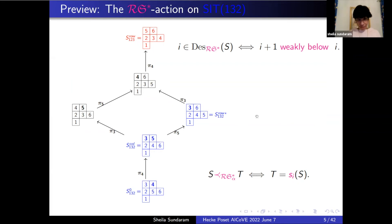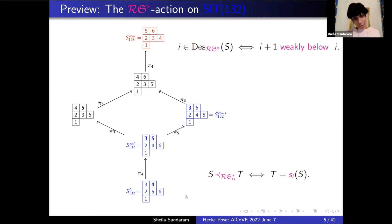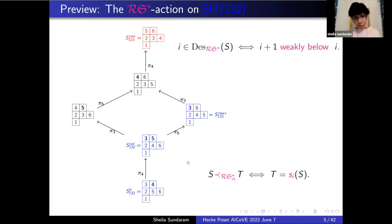This is the smallest example I could find that was meaningful. If you look at the standard immaculate tableau drawn on the bottom, three is a descent because four is weakly below it, and four is a descent because five is also below it. I can switch the four and the five. I can't switch the three and the four because that would produce a tableau that violates the row-increasing condition.